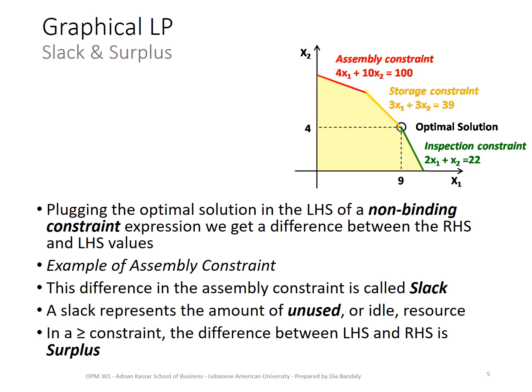Let's do the example of our assembly constraint — plugging in the optimal solution (9, 4): 4×9 = 36, plus 10×4 = 40, giving 76. So we have 76 on the left-hand side and 100 on the right-hand side. Before proceeding, let me emphasize one thing: what does the left-hand side of a constraint mean? We know the right-hand side represents the available resource. The left-hand side is what we have actually used.